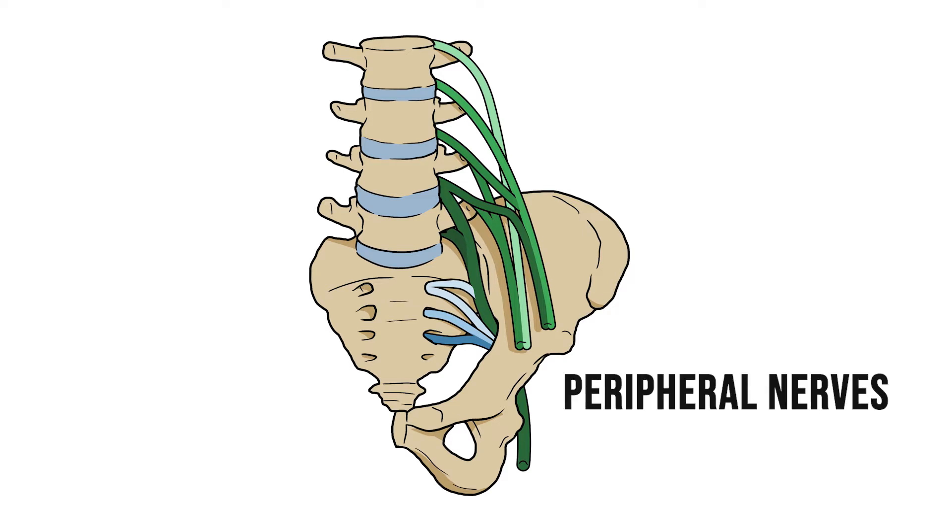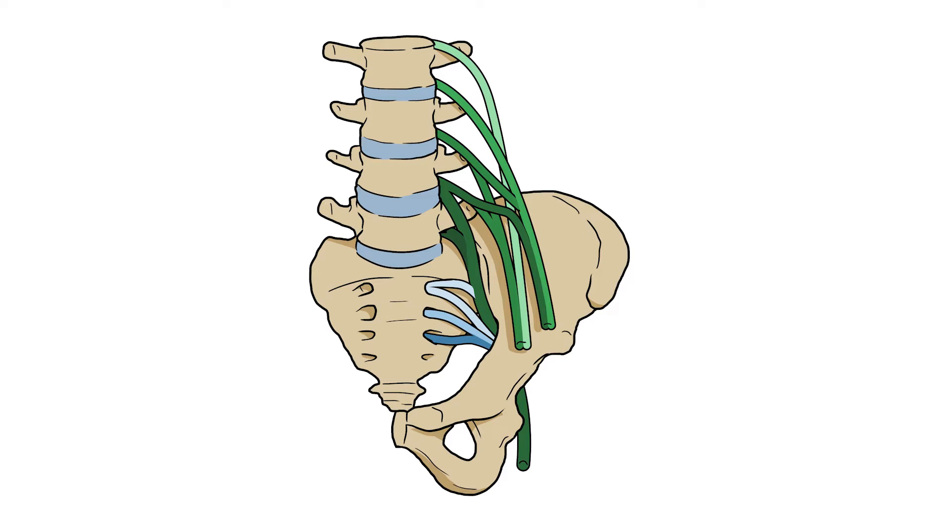We'll then have peripheral nerves that travel out into the limb. For this video I'm not going to worry about the details of which nerve roots end up in which peripheral nerves. Instead I'd like to run through the myotomes and dermatomes that they ultimately supply.